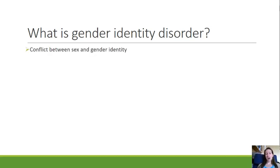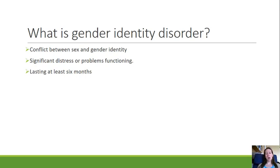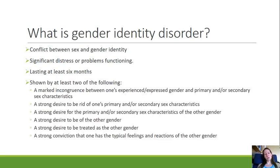Basically, it's where you have a conflict between biological sex and gender identity — where someone's biological sex might be male but they feel strongly that their gender identity is female. That conflict can cause significant distress and problems functioning. To be diagnosed, these issues should have been present for at least six months and the individual needs to show at least two of the listed symptoms, accompanied by significant stress or problems functioning.